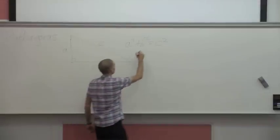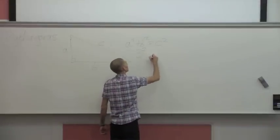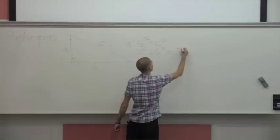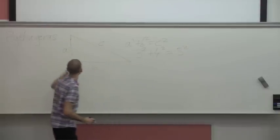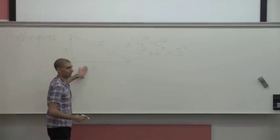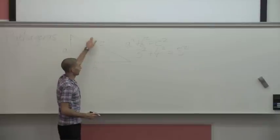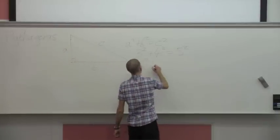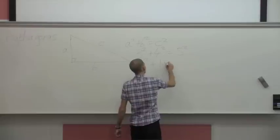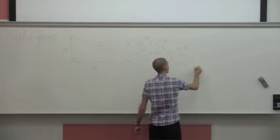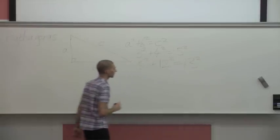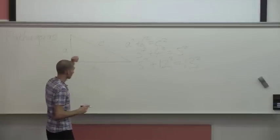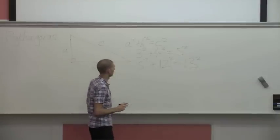Maybe you remember from school there are examples like 3 squared plus 4 squared equals 5 squared. So if I have a right-angled triangle, and this side has length 3, and this has length 4, then this has length 5. There are lots of other nice examples like that — 5 squared plus 12 squared equals 13 squared, and so on. I'll show you in a little bit how to generate infinitely many nice examples like this.